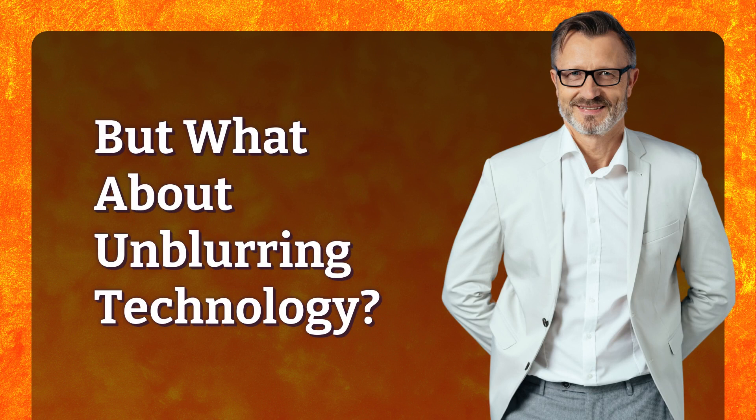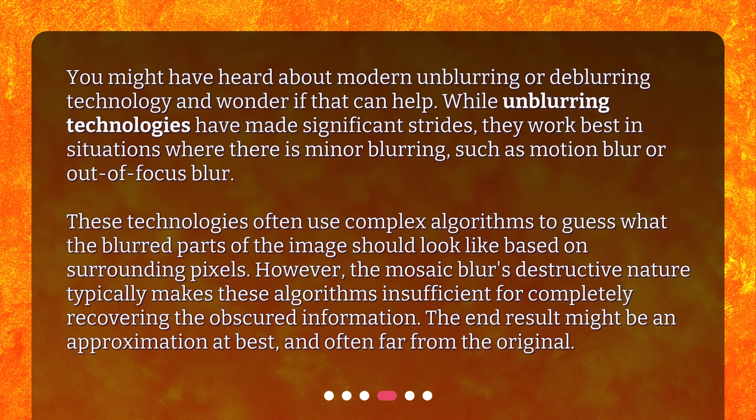But what about unblurring technology? You might have heard about modern unblurring or deblurring technology and wonder if that can help. While unblurring technologies have made significant strides, they work best in situations where there is minor blurring, such as motion blur or out-of-focus blur. These technologies often use complex algorithms to guess what the blurred parts of the image should look like based on surrounding pixels. However, the mosaic blur's destructive nature typically makes these algorithms insufficient for completely recovering the obscured information. The end result might be an approximation at best, and often far from the original.